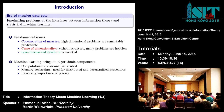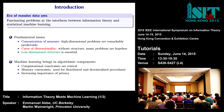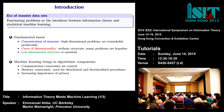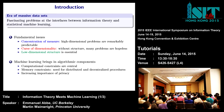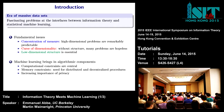At this interface between information theory and statistical machine learning, there are lots of interesting problems. One of the fundamental issues that comes up with big data sets is concentration of measure. High-dimensional problems are often remarkably predictable, much more so than you might expect naively — that's sort of a blessing of dimensionality. But there are also curses of dimensionality: in high dimensions, if you don't have structure, you end up paying prices both computationally and statistically, in terms of how many samples you have to collect, prices that often grow exponentially in the dimension.